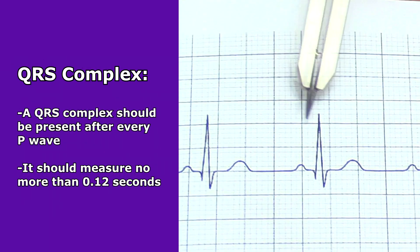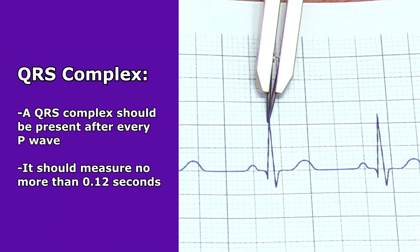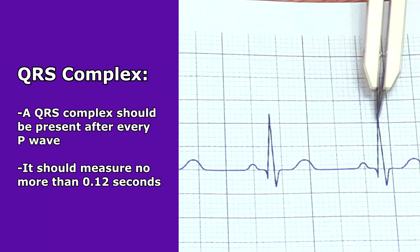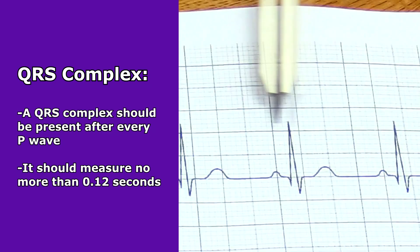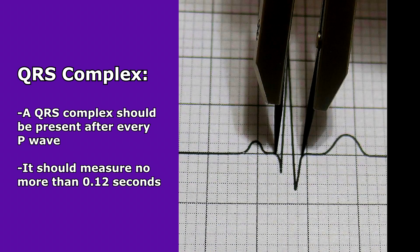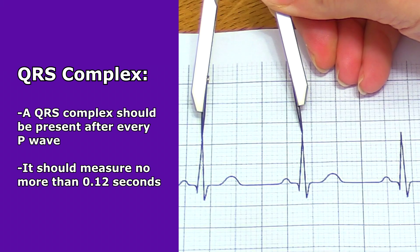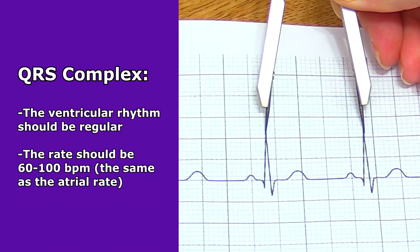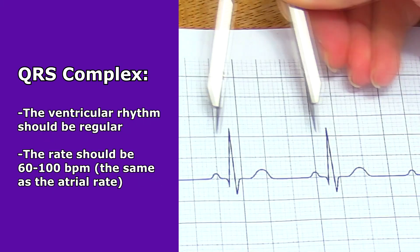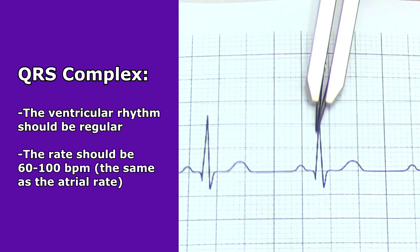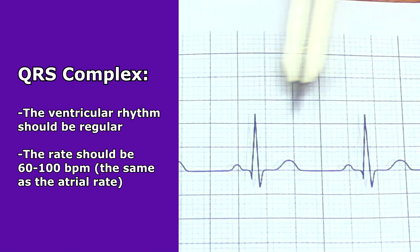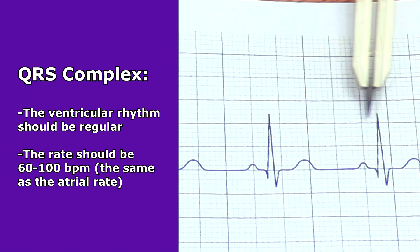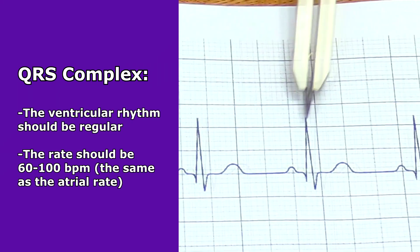When you look at the QRS complexes, there should be one present after every P wave, and they should measure no more than 0.12 seconds. This tells us about the ventricular rhythm and rate. With normal sinus rhythm, the ventricular rhythm should be regular and the rate should be 60 to 100 beats per minute — it should actually be the same as the atrial rate.